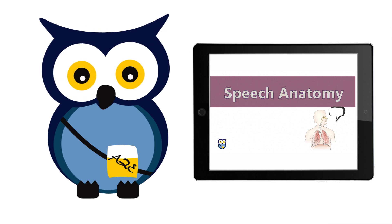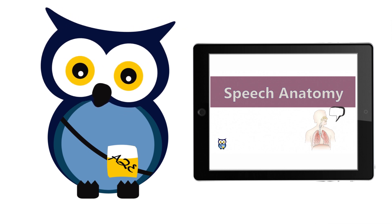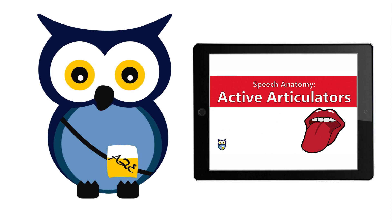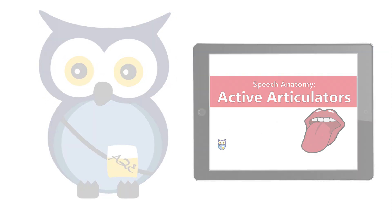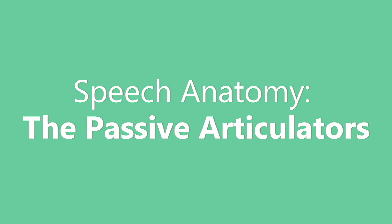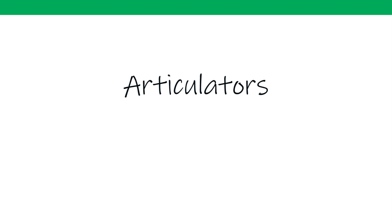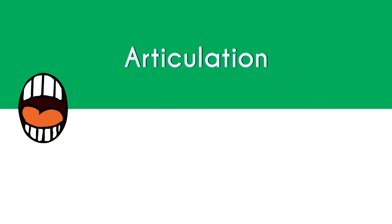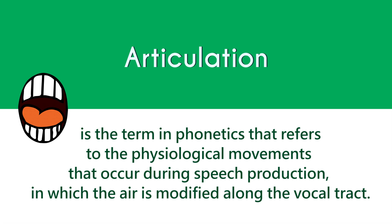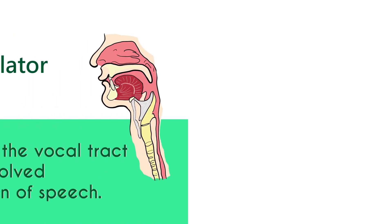Today we're covering speech anatomy again as part of articulatory phonetics. We did the active articulators last week, and today I'm going to review the passive articulators. Since we're talking about articulators, we should provide a definition of articulation. Articulation is a term in phonetics used to refer to the physiological movements that occur during speech production, in which the airflow is modified along the vocal tract.